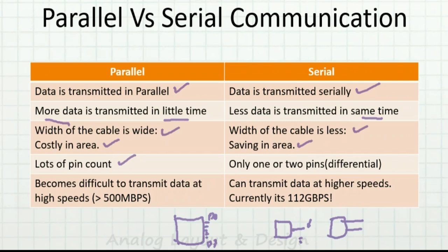There is a problem: once we go higher in speed — more than 500 Mbps — it becomes very difficult to transmit a lot of parallel data. On the flip side, we can transmit serial data at much, much higher speeds. Currently it is going around 112 Gbps — that's a lot of speed.